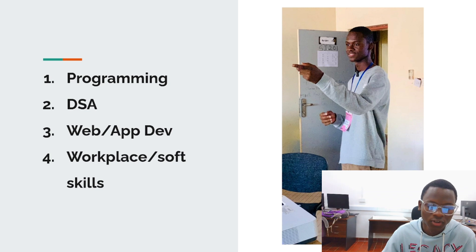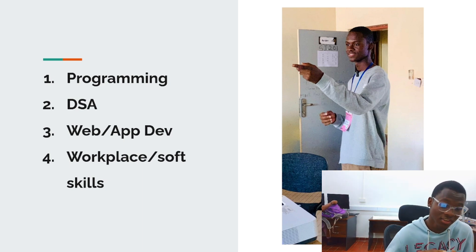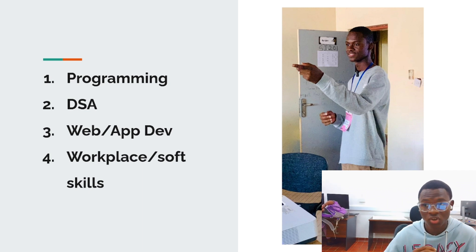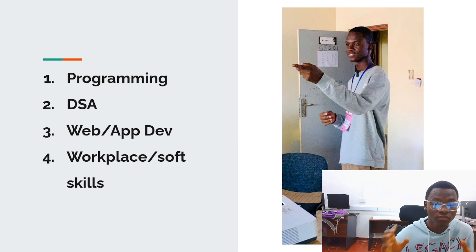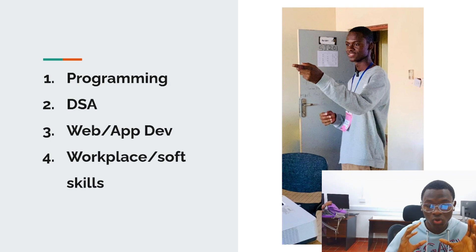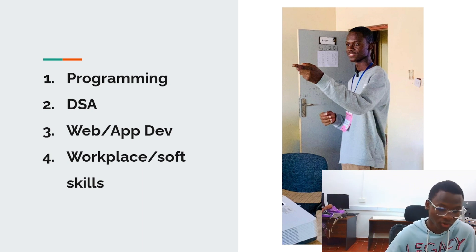Number two is DSA, which stands for data structures and algorithms. You do not necessarily have to be an expert in this, but having a small knowledge of it is really important. And then the third one is web dev or app dev. A lot of these internships involve working with web technologies or app technologies. So understanding web development or app development is really, really important.